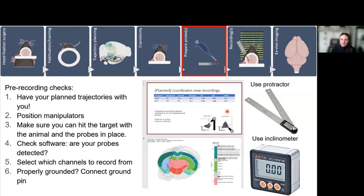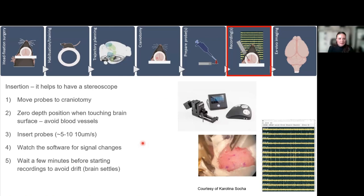Some pre-recording checks: have your planned trajectories with you, use a projector and an inclinometer to make sure you have the azimuth and elevation angles right. Test that you can—because you didn't test it. You want to check the software. Are the probes properly detected? Select which channels to record from. This has been shown previously. And check whether it's properly grounded. Then, when you're done with all the checks, you can bring the mouse in with the craniotomy and move the probes close to the craniotomy.